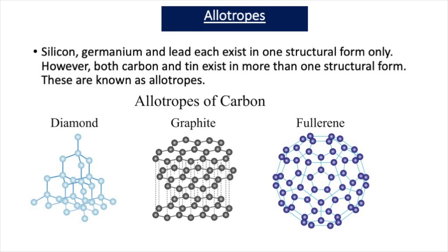Silicon, germanium and lead exist in only one structural form. However, both carbon and tin exist in more than one structural form, known as allotropes. Allotropes are different structural forms of the same element. Diamond, graphite and fullerene are all allotropes of carbon, and because they have different structures, they have different properties.